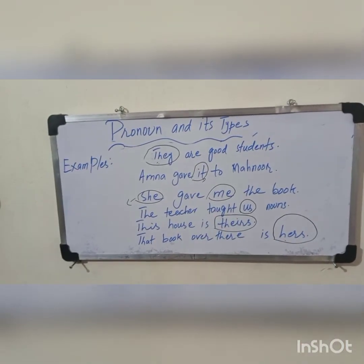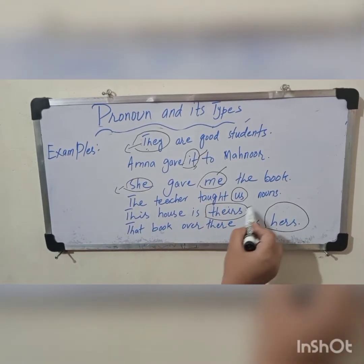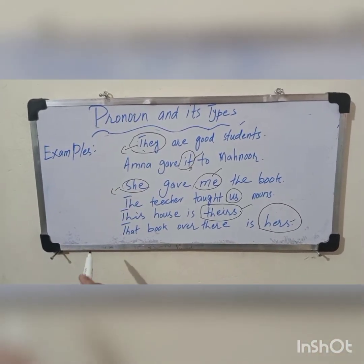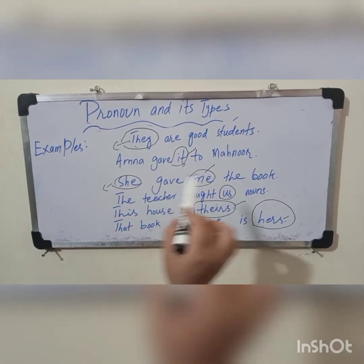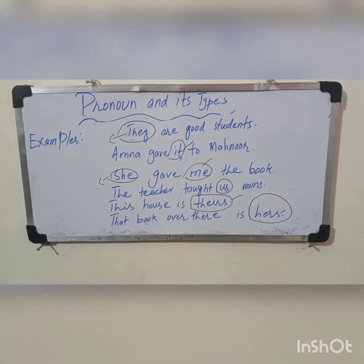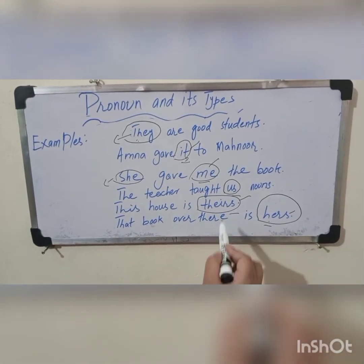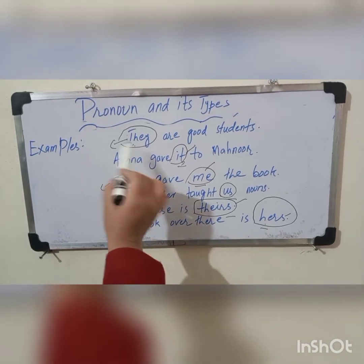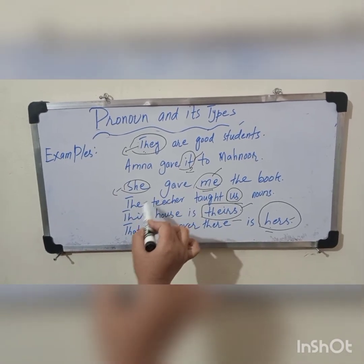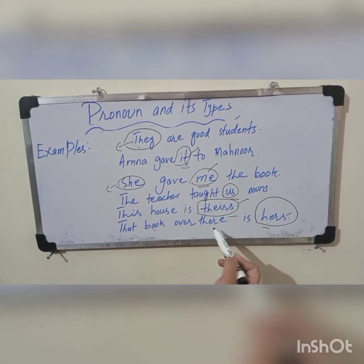یہاں پہ میں نے آپ کو تینوں cases بتا دی ہیں کہ subject pronoun، object pronoun، اور possessive pronouns کیسے use ہوتے ہیں۔ دوبارہ یاد رہے: subject pronoun کو nominative case بھی کہہ سکتے ہیں، object pronouns کو objective case، اور possessive pronouns کو possessive case بھی کہہ سکتے ہیں۔ اب pronoun and its types میں سے پہلی type یعنی personal pronouns مکمل ہوئی۔